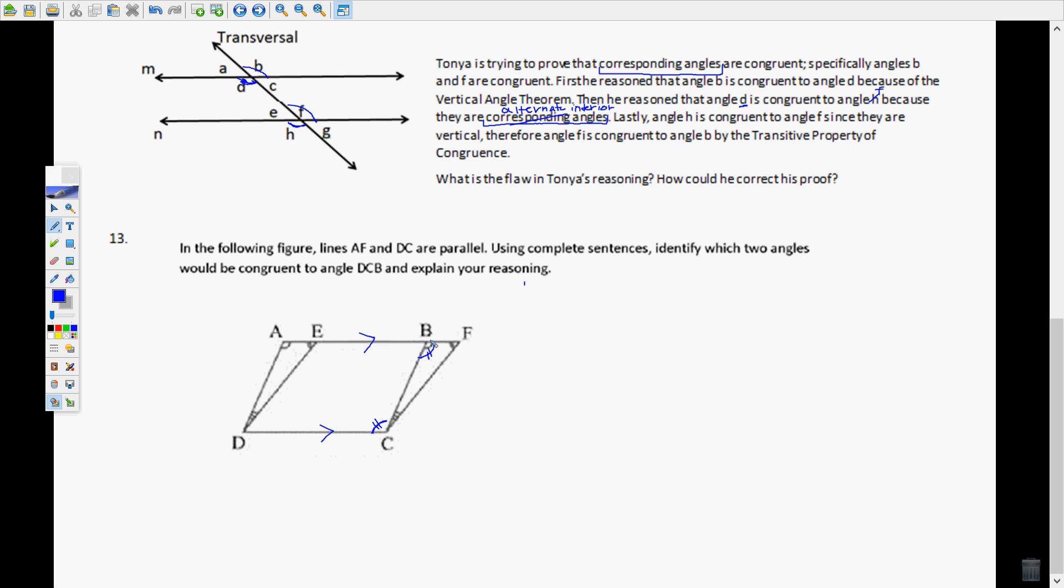If you notice this little marking with the one arc in the corner of angle CBF, it matches with the angle over here DAF. And so angle DAF would also be congruent to angle DCB by the transitive property, because if DCB is congruent to CBF and CBF is congruent to DAE,